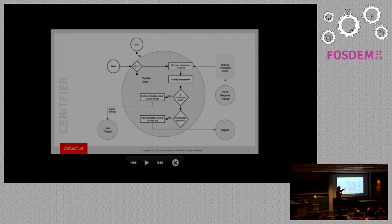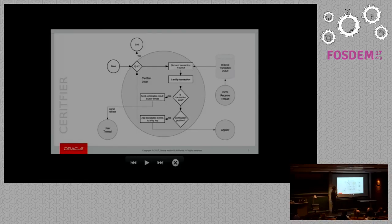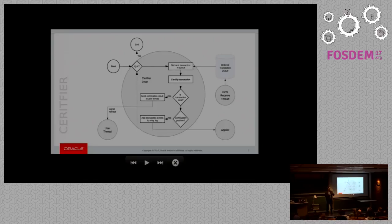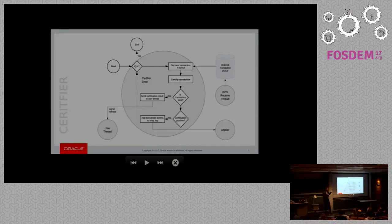This is what makes the multi-master system work. There's a split here: if the transaction is local we just say it's fine and commit, but if the transaction is not local and certification is positive, we need to store that transaction to be applied. We don't execute the transaction immediately. We just reuse what's already available with asynchronous replication — the slave applier. We put it in the relay log and then eventually it will apply.